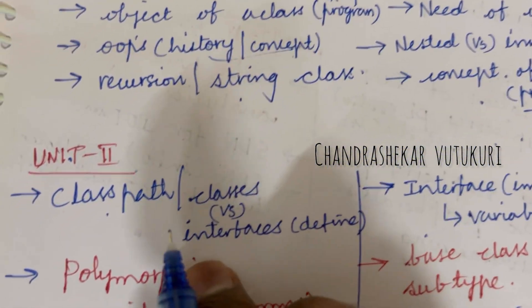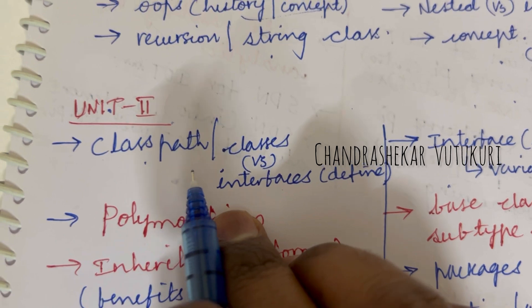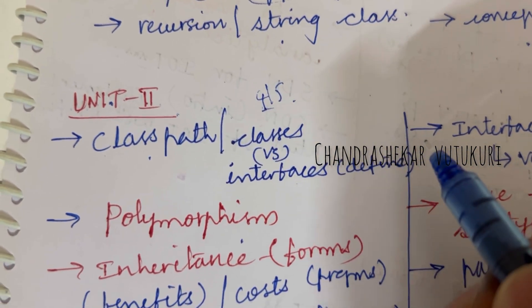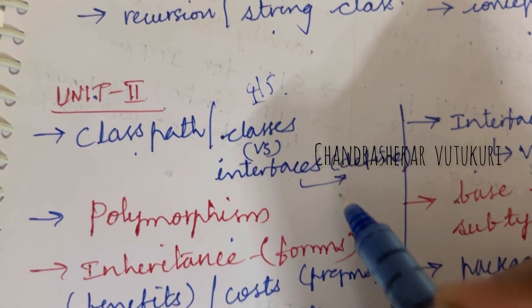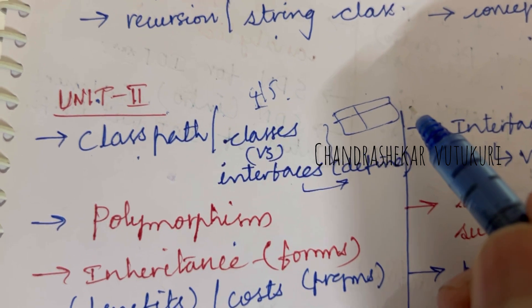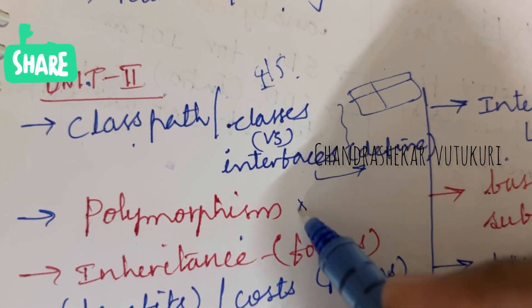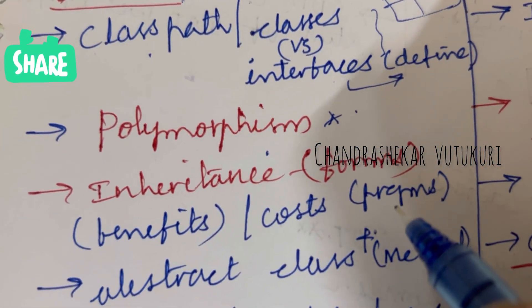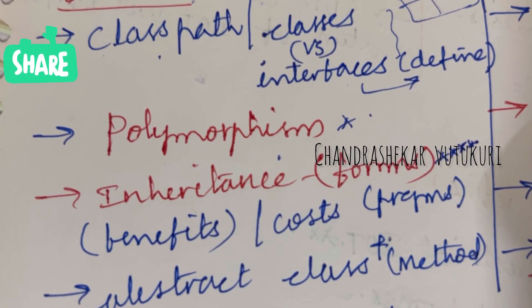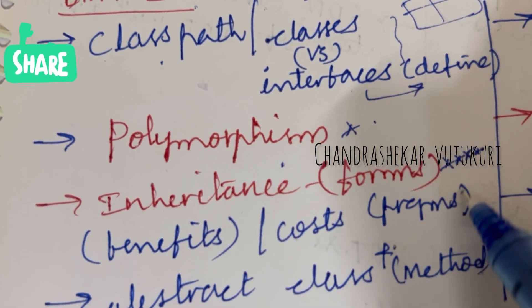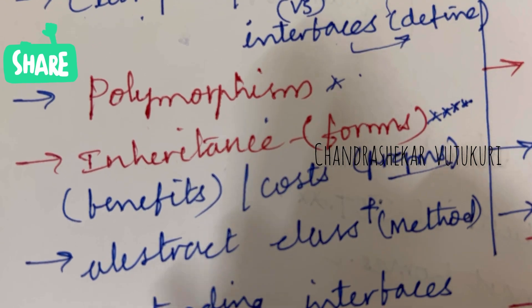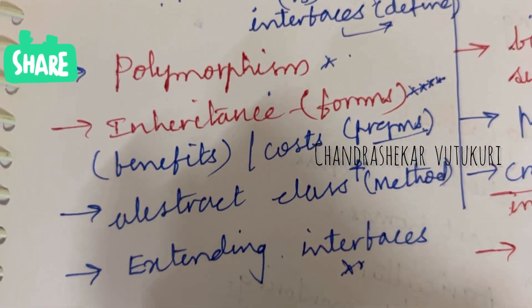If a theory question is asked, you need to write it in point-wise format. Coming to unit 2, questions number 4 and 5: class path, classes versus interfaces, and the definition of the term 'interface' may be the short question. Differences need to be worked out in a tabular column very neatly. Polymorphism may be the short question. Inheritance is set as the topmost question which may occur as a long question this time. Related to inheritance, you need to work out its benefits, costs, as well as the programs. Abstract class, abstract method, and extending interfaces may be the short question.